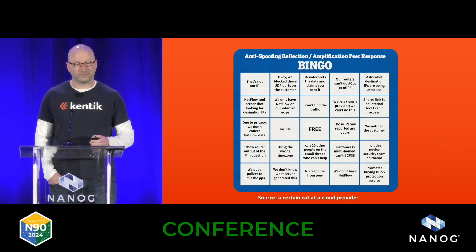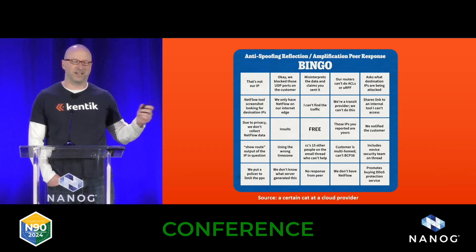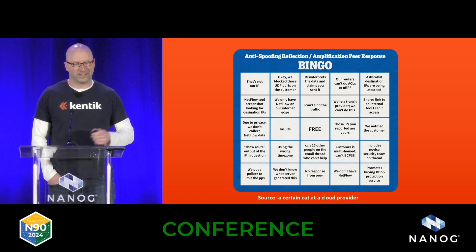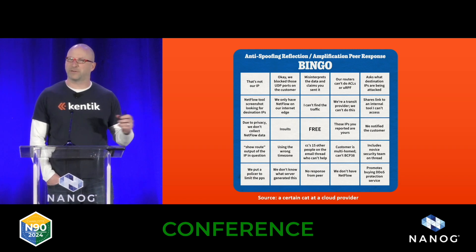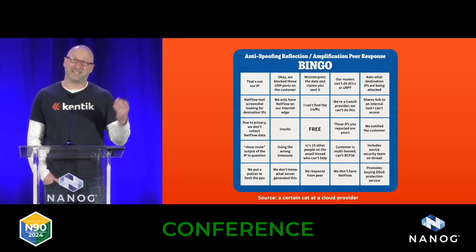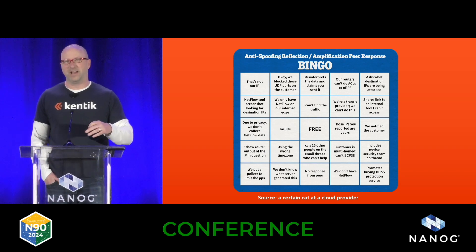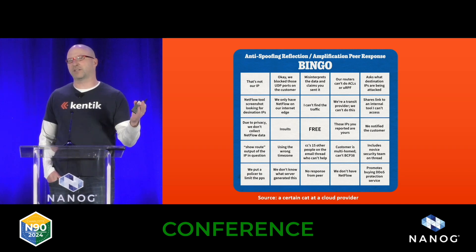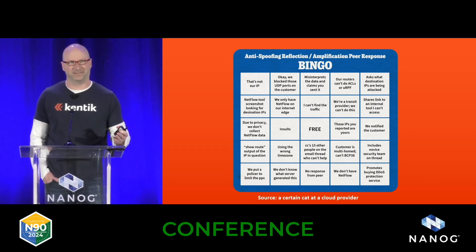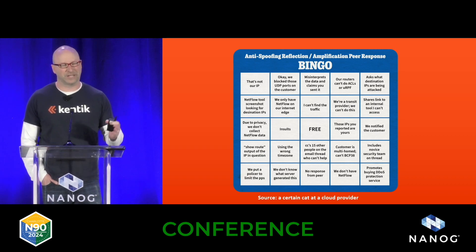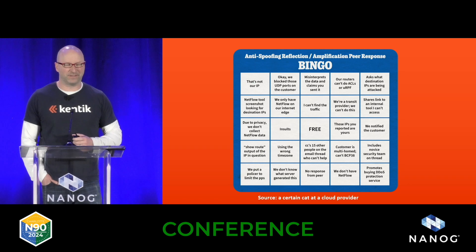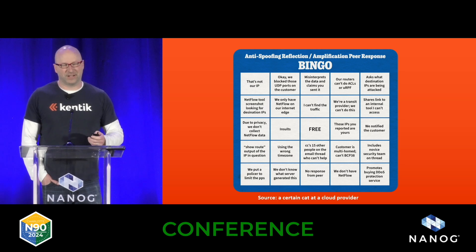There are so many excuses that a certain network cat at a cloud provider made a bingo card — the anti-spoofing response bingo card. It's a little hard to read, but there's everything under the sun. In the top left we've got 'those aren't our IPs,' and you're like, yes, they're not your IPs — that's the problem, that's what we're trying to tell you. Or the solution offered is 'we'll just block those UDP ports,' and we're like, well, there's no way that's a long-term solution. There's no way around having to deal with a bunch of excuses in this anti-spoofing response bingo card.